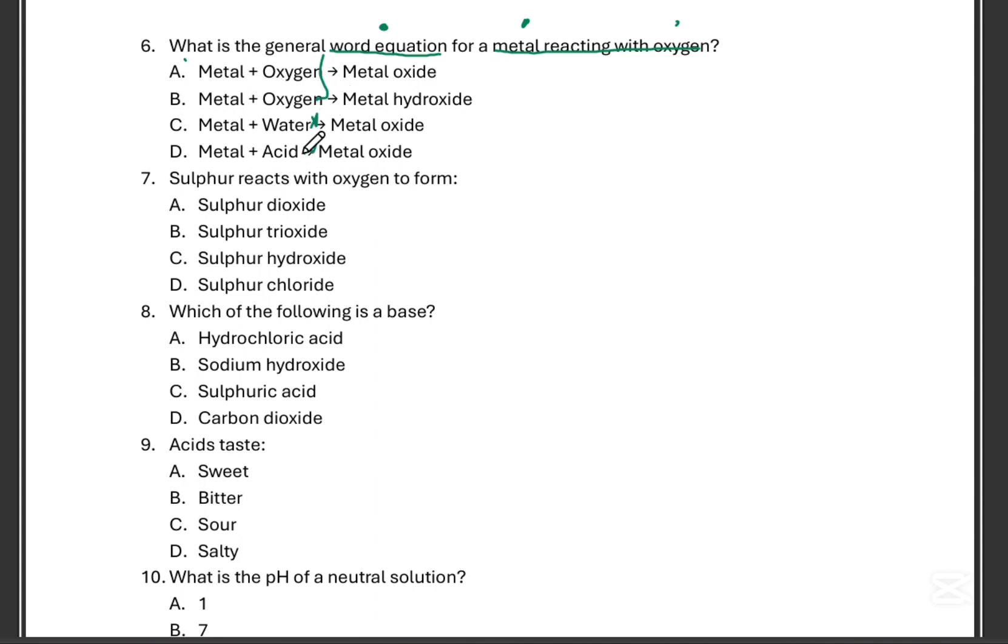So we are eliminating these two because they're saying metal and oxygen. So nothing about water and nothing about an acid, right? Then we then look at these two options now. Now do we get a metal oxide or metal hydroxide? It is a metal oxide, not hydro. We're not talking about hydrogen here. We didn't mention anything about hydrogen and oxygen. We're just specifically talking about metals and oxygen. So the answer is A.